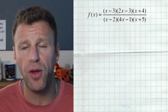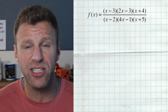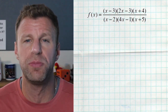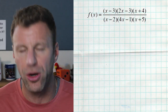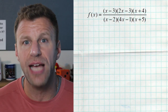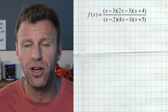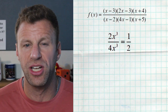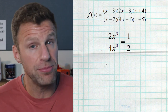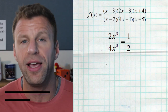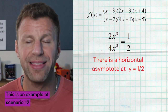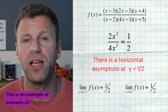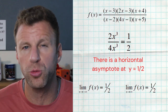Now watch out for a problem where the numerator and denominator are in factored form. For end behavior, you want standard form, but remember we only need the leading terms. So you don't have to multiply the entire numerator and denominator out — just get those leading terms. In the numerator, x times 2x is 2x squared, times another x makes 2x to the third. In the denominator, x times 4x is 4x squared, times another x is 4x cubed. Dividing 2x cubed by 4x cubed, the x's all cancel and we get 2 over 4, or one half — a constant. So we have a horizontal asymptote at y equals one half, and both end behaviors are one half.